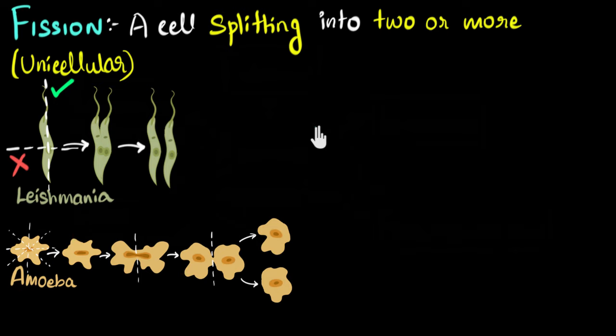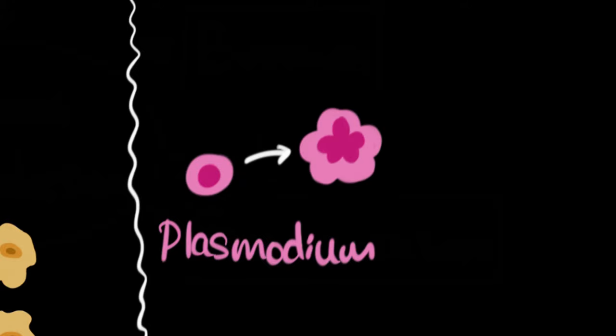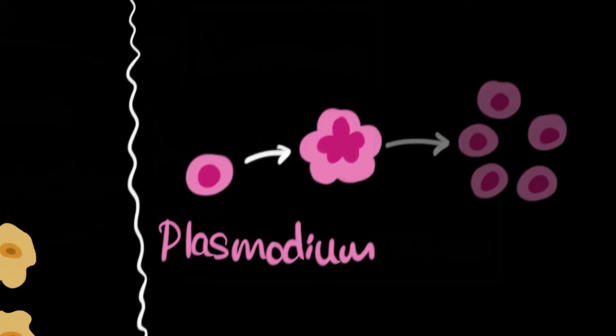There are certain unicellular organisms that can divide into more number of offsprings. Let me give you an example of that. An example of that would be plasmodium. When plasmodium is ready to divide, what you will find is that it will split simultaneously into more than two. I've just shown five as an example over here, but it can split into more than two offsprings. And as a result...